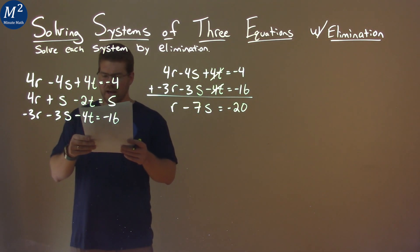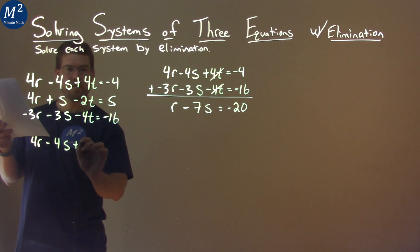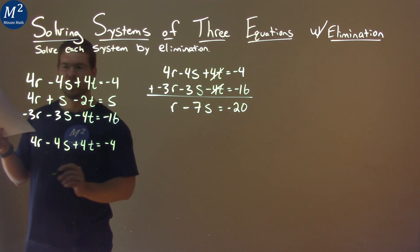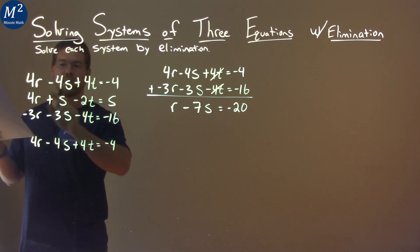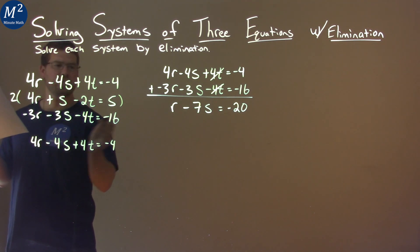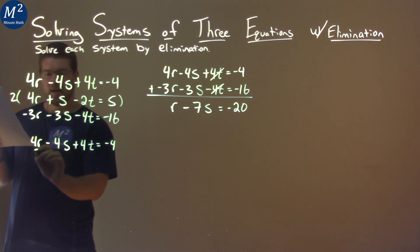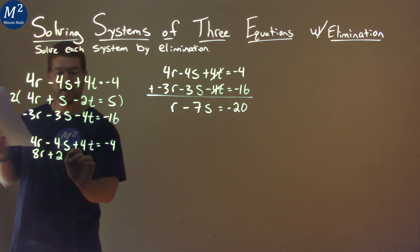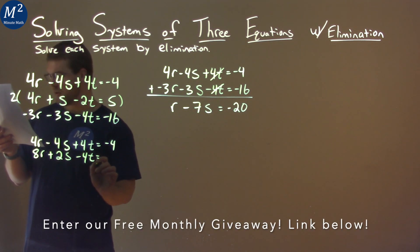So if we look at our first equation, if I rewrite that here, 4r minus 4s plus 4t equals negative 4. If I take the second equation here and I multiply everything by 2, if I multiply everything by 2, what do I have? I'm gonna put it down here. We have 8r plus 2s minus 4t equals positive 10.